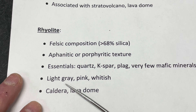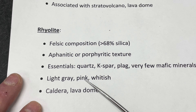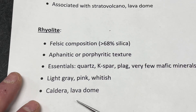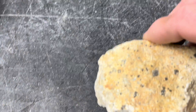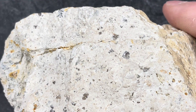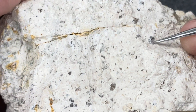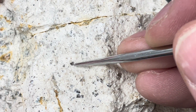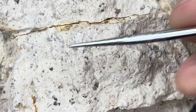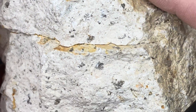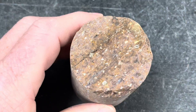Color-wise, rhyolites tend to be much lighter — light gray, maybe pinkish due to K-feldspar content, or even whitish depending on how it crystallized. Calderas and lava domes are typical of rhyolite. Here's a white to light gray sample where we can see some quartz crystals and some overall banding. This may have actually been ash at one point, but compositionally it would still be rhyolite.